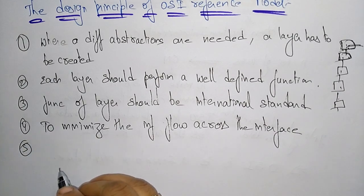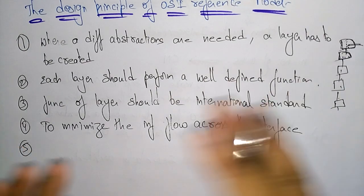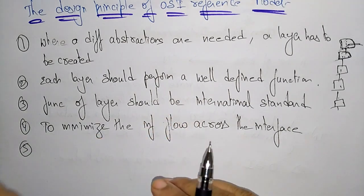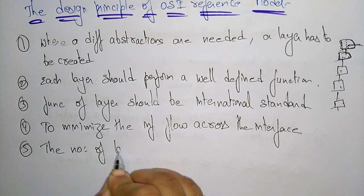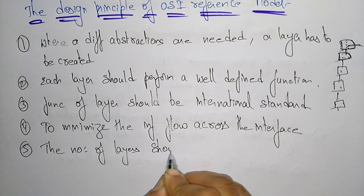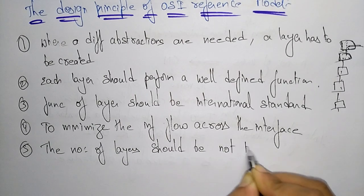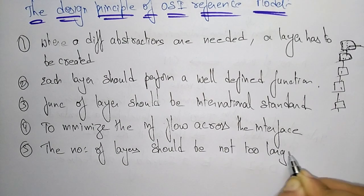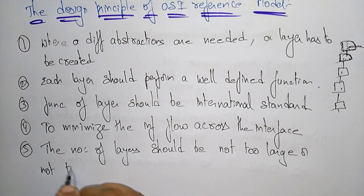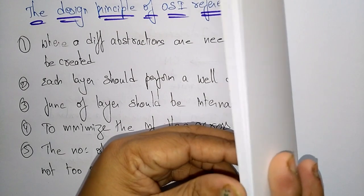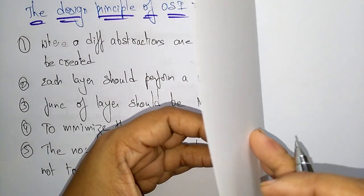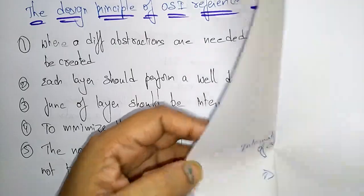Next, the number of layers should be not too large and not too small. The OSI model creates seven layers. These are the design principles of the OSI reference model. Now let me explain the features of the OSI reference model, after which we will discuss those seven layers.